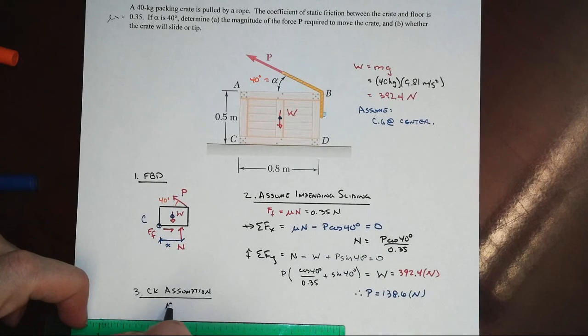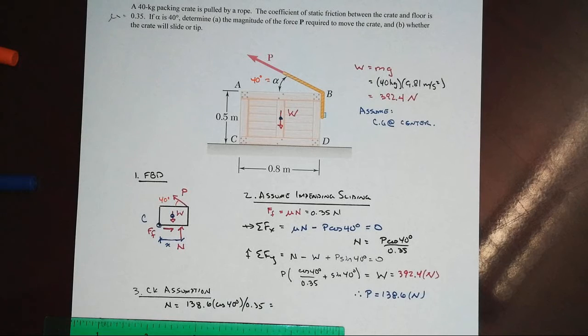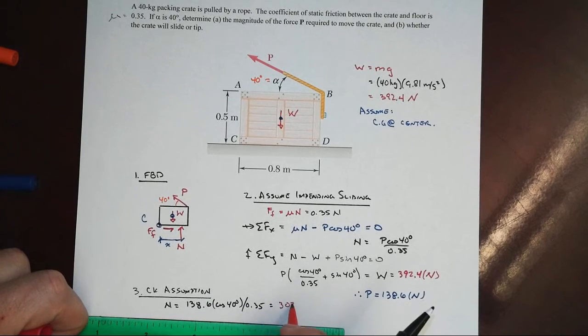We have our expression up here that n is equal to P of 138.6 times cosine of 40 degrees divided by 0.35. And that value will be 303.4.